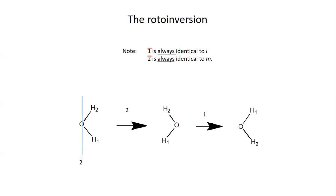By convention, we do not use rotoinversions of order 1 and 2. Instead, we use the inversion and the reflection, simply because the human brain more easily can invert and reflect rather than rotoinvert — rotoinversion requires two steps within your head, while inversion and reflection each require only one step. That is why those symmetry operations are conventionally used instead of the 1-bar and 2-bar rotoinversions.